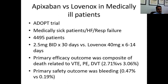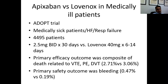The ADOPT trial used apixaban in medically ill patients with severe heart failure or respiratory failure — apixaban 2.5 mg twice daily for 30 days versus enoxaparin 40 mg for one to two weeks. The primary efficacy outcome was a composite of death related to DVT, pulmonary embolism, or venous thromboembolism. The apixaban arm was more efficacious compared to enoxaparin, though bleeding risk was slightly increased in the apixaban arm.